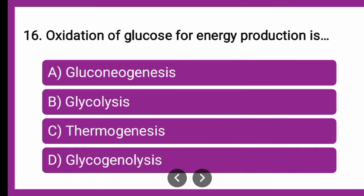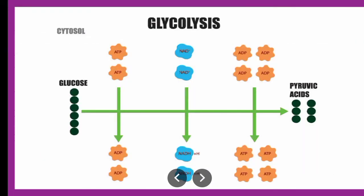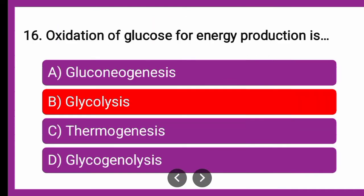Next question: Oxidation of glucose for energy production is — whether it is gluconeogenesis, glycogenesis, thermogenesis, or glycolysis? The correct answer for question number 16 is glycolysis, where NAD+ is getting reduced. Oxidation of glucose for energy production is glycolysis.